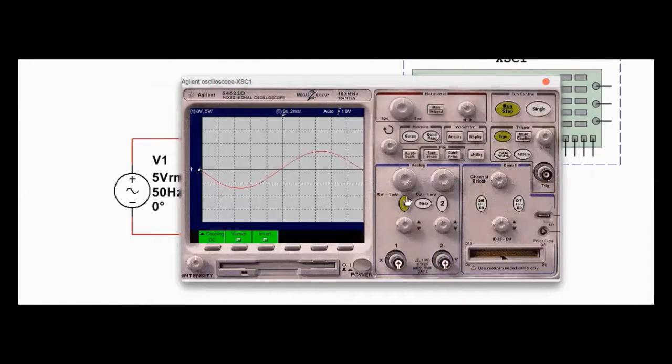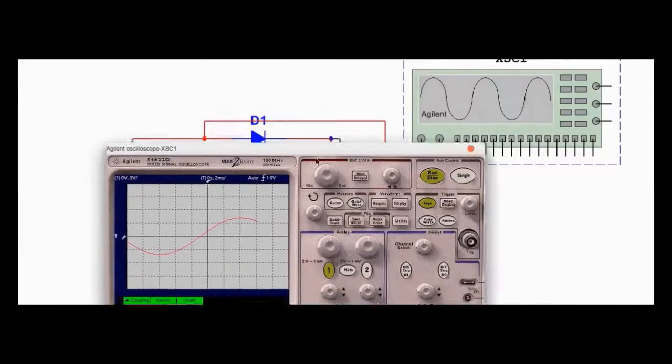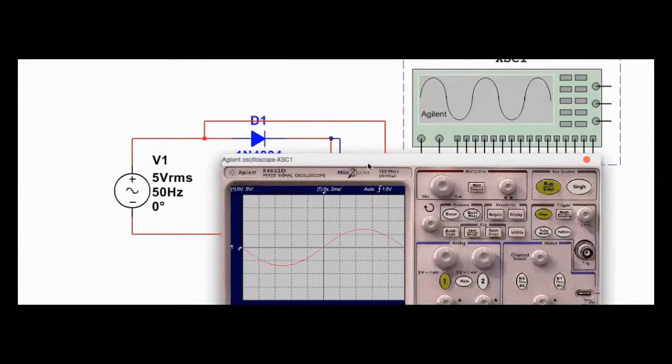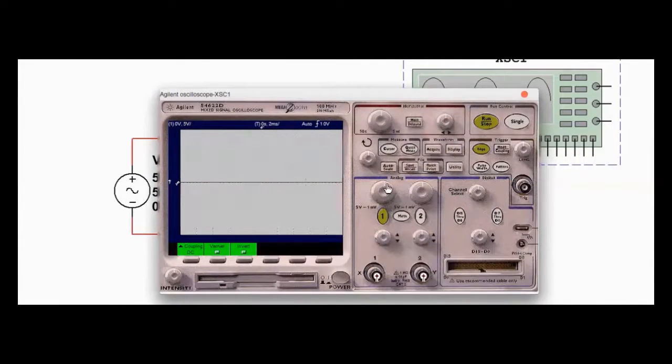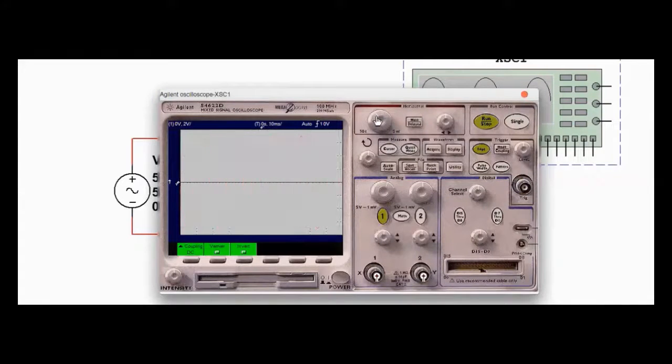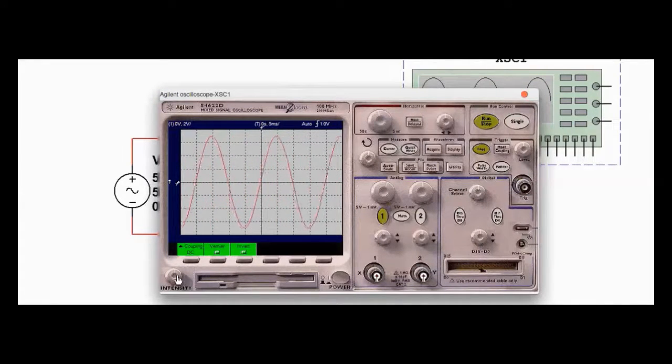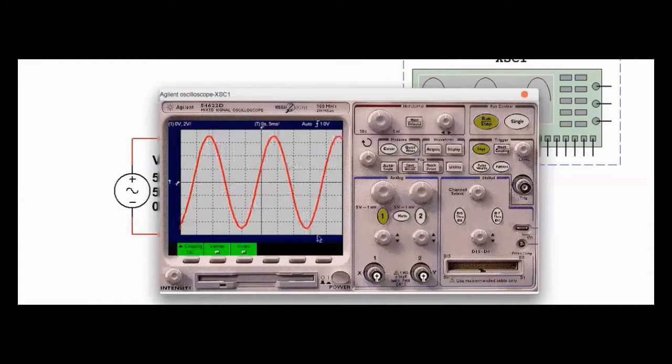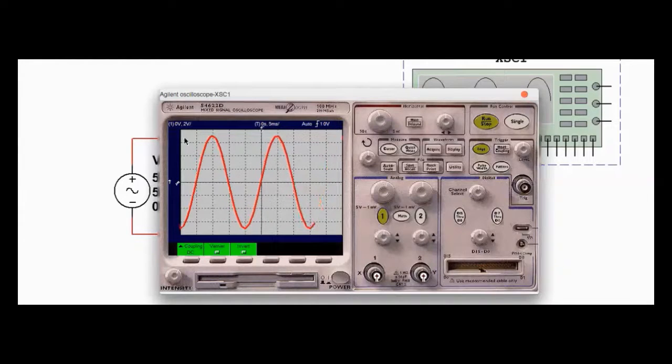Alright, so we have channel one on, which is this channel here, measuring the input. So this is what the input looks like. Let me just get it a little more. Alright, so this is the input. Let's get the intensity up. Okay, so this is our input, as we're seeing now. We're seeing a typical alternating signal, which actually changes direction. So this is our zero reference line. So we have the AC signal flowing up, and then it goes negative and continues on.